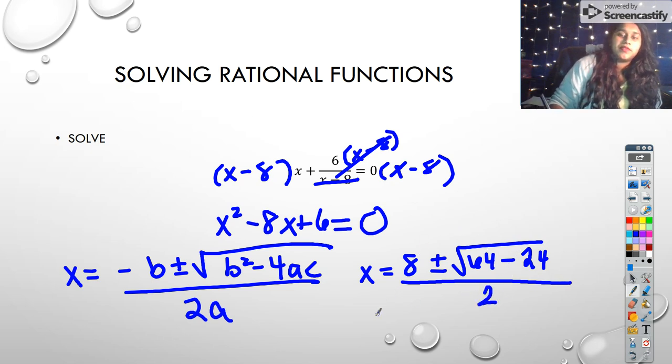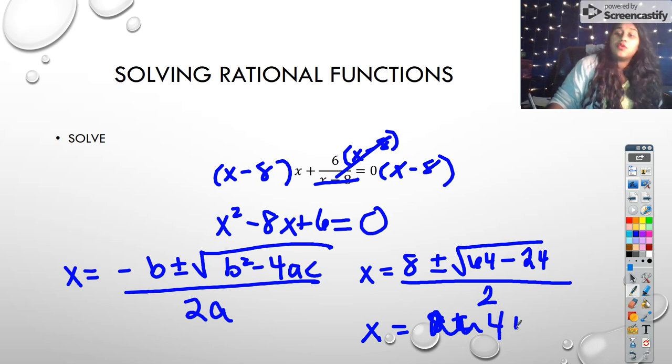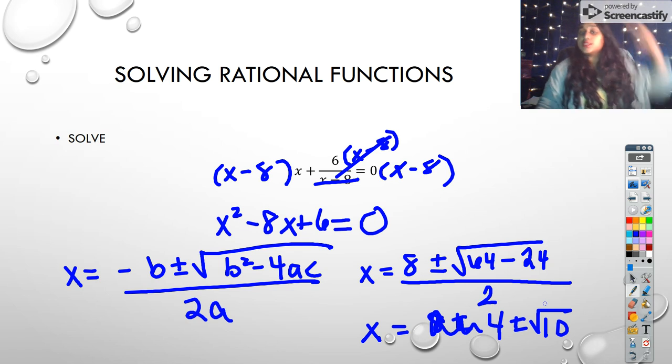And then we would simplify that down, so then I get x is equal to 8 plus or minus, oh sorry, we can actually simplify even further, I see it now, 4 plus or minus the square root of 10. So 4 plus square root of 10, 4 minus square root of 10, those are going to be our x values.